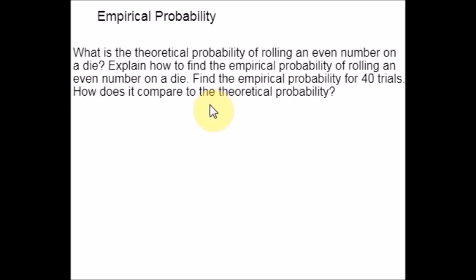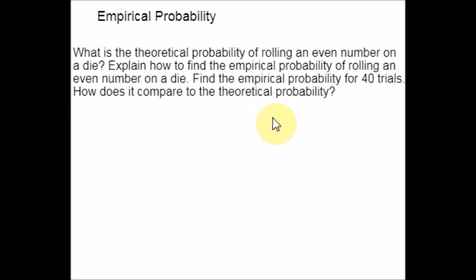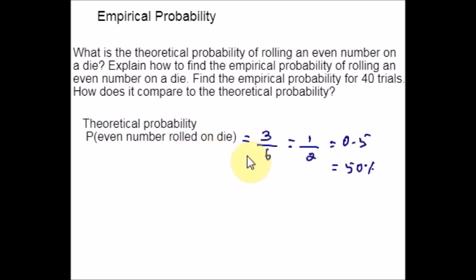For the theoretical probability, a die has 6 faces: 1, 2, 3, 4, 5, 6. The even numbers are 2, 4, and 6 — that is 3 outcomes. So the probability of rolling an even number on a die is 3 out of 6. Hope you are clear with the theoretical probability part.